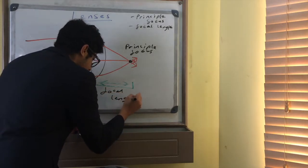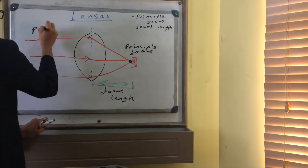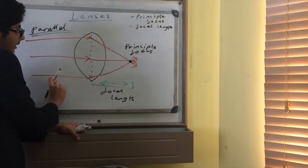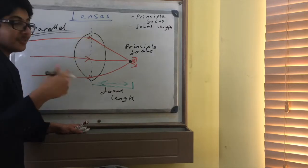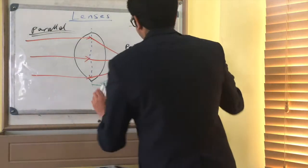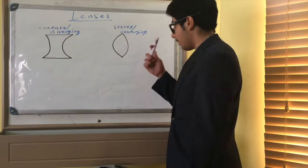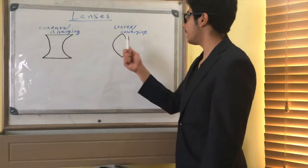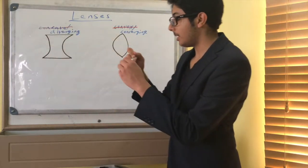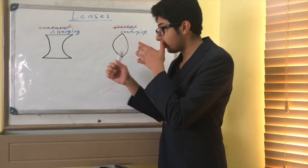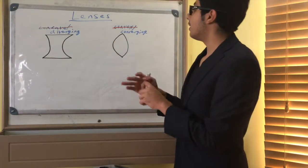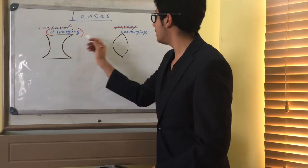One thing to notice about the incoming light rays is that they are parallel. In your exam you have to draw these lines parallel, and remember to use a ruler — it looks much better with a ruler. Now, the easiest way to remember which lens is which is not through the convex and concave names but through the diverging and converging names.